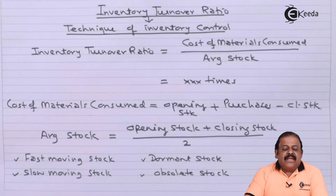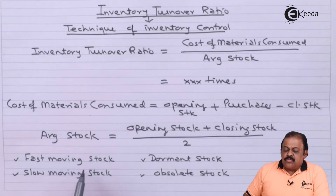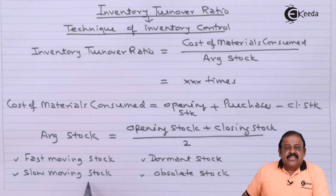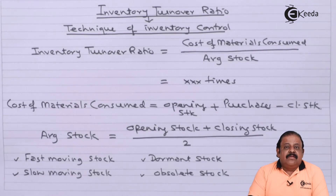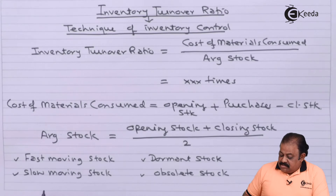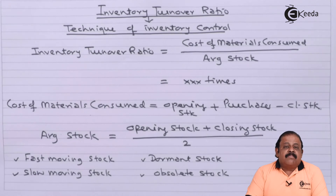This ratio helps management take important decisions about inventories. If inventory turnover ratio is very high, there is a need for investigation because it indicates a possibility of shortage of materials, as stocks are moving very fast. Similarly, if inventory turnover ratio is very low, investigation is required to find out why there is excessive stock, because it may result in losses if the price falls, if there is no demand, or if stock gets destroyed by fire or theft.